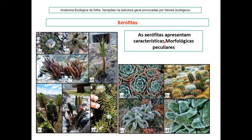Como características morfológicas peculiares, nós temos exemplos de plantas de campo rupestre, de Diamantina. Aqui podemos observar suculência, redução de folhas até serem transformadas em espinhos. Também folhas muito pequenas — usando o dedo como parâmetro de escala — veja como essa folha é reduzida.